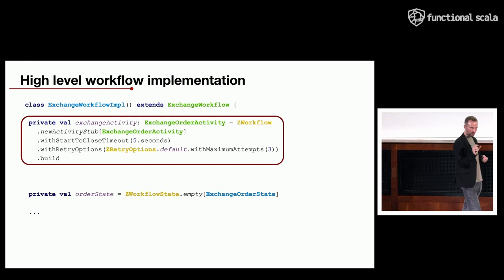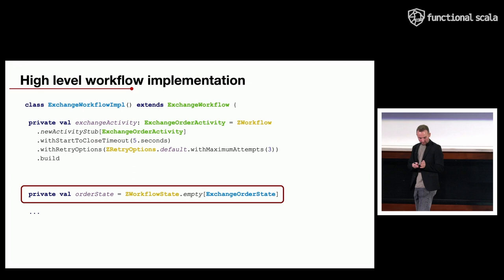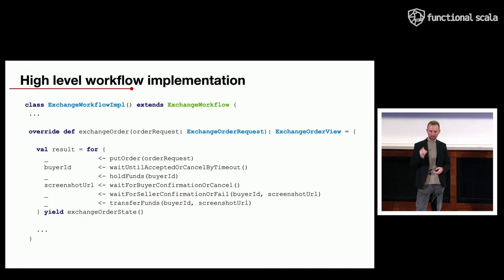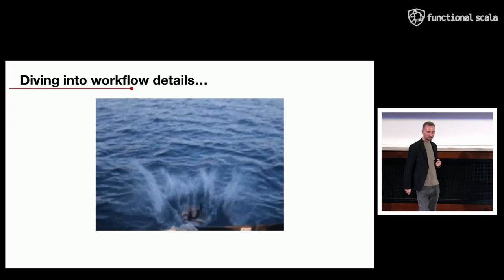To interact with activities from inside the workflow, you create an activity stub providing it with the activity interface, and configure resiliency options like timeouts and retry options. The second part is representing the business process state — in this case, an exchange order state representing the current stage of the process. After that you implement the workflow method with steps like putting the order and so on.